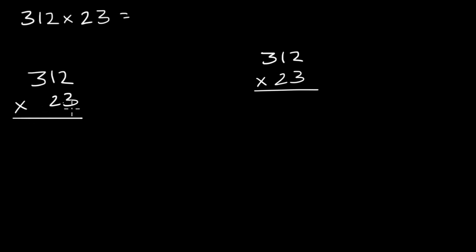So in the standard algorithm or the standard way, you start with the ones place over here, and you could first multiply it times the ones place above. So 3 times 2 is 6. Then you could multiply 3 times this 1. It's really 3 times 10, so you get 30. And then you could multiply 3 times this 300, which would be 900. So 3 times 312 is 936.